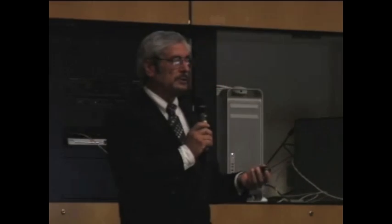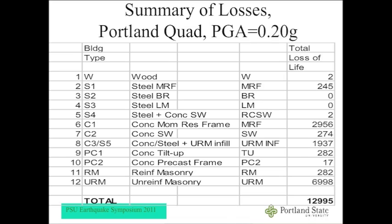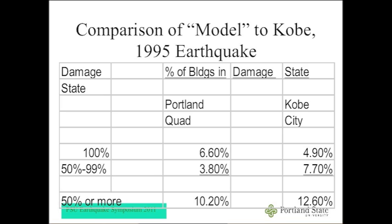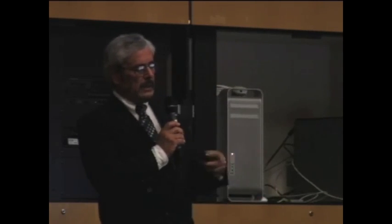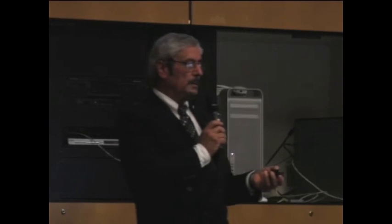Here is the summary of losses, looking at building types, their definitions, and total loss of life — down below you can see it's roughly 13,000 lives, including all the modifiers. We compared this to Kobe in terms of percent damage to structures and saw a degree of comparability, since Kobe is somewhat similar to Portland and the average PGA was about the same. Our study shows the Portland Quad at about 10.2% and Kobe at about 12.6% with a 50% or more probability of damage.